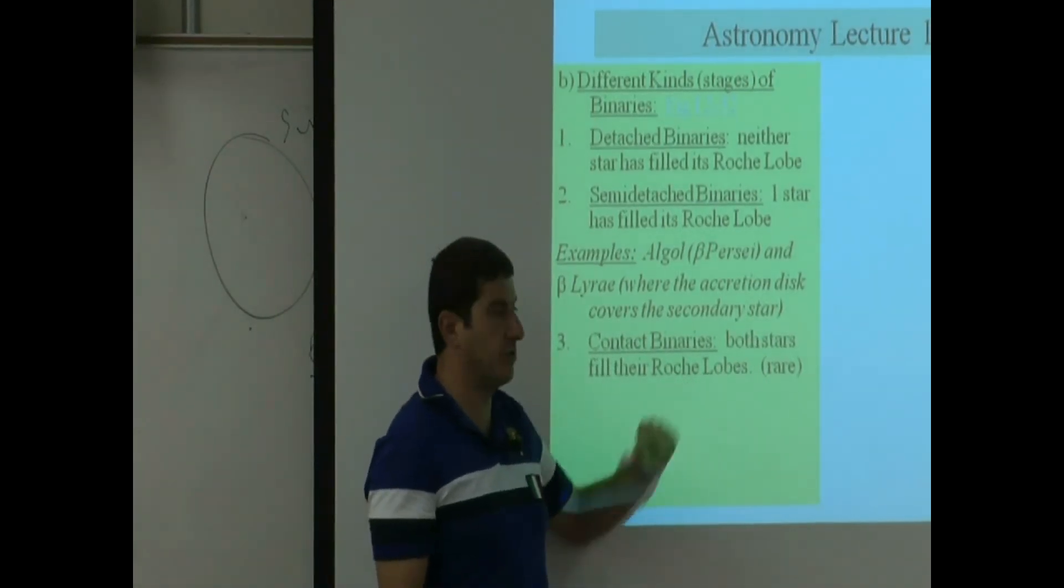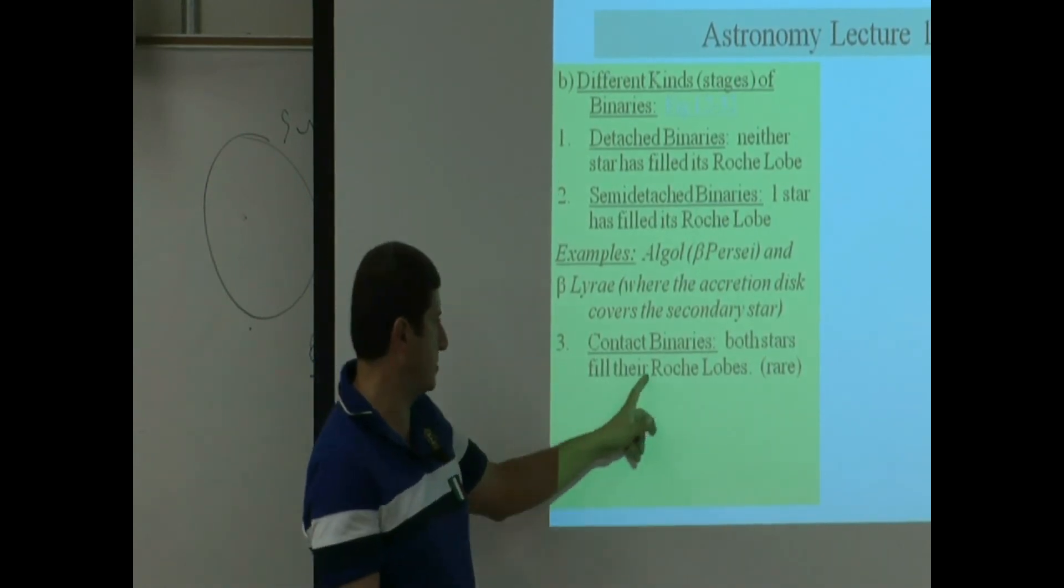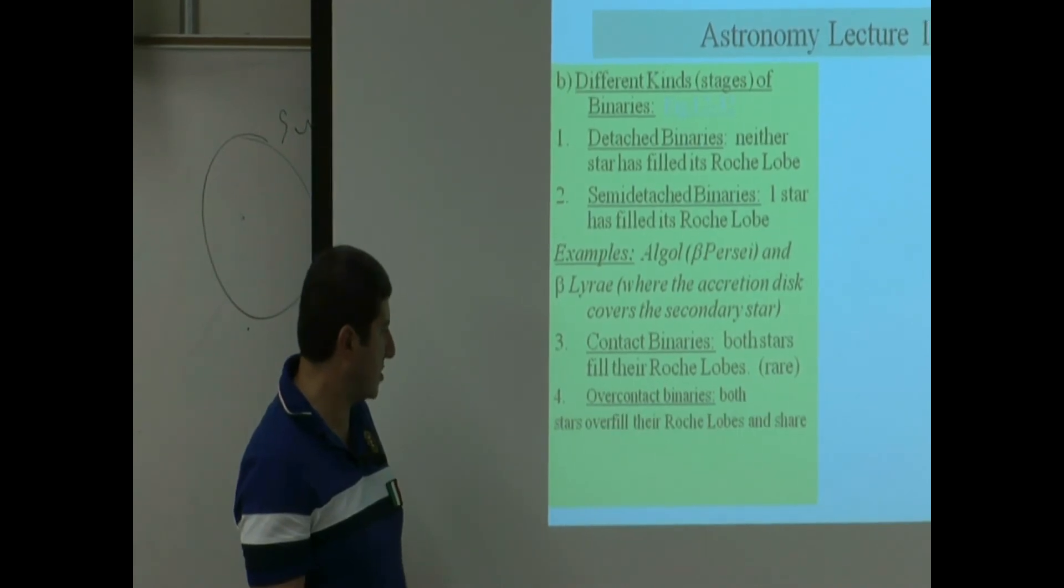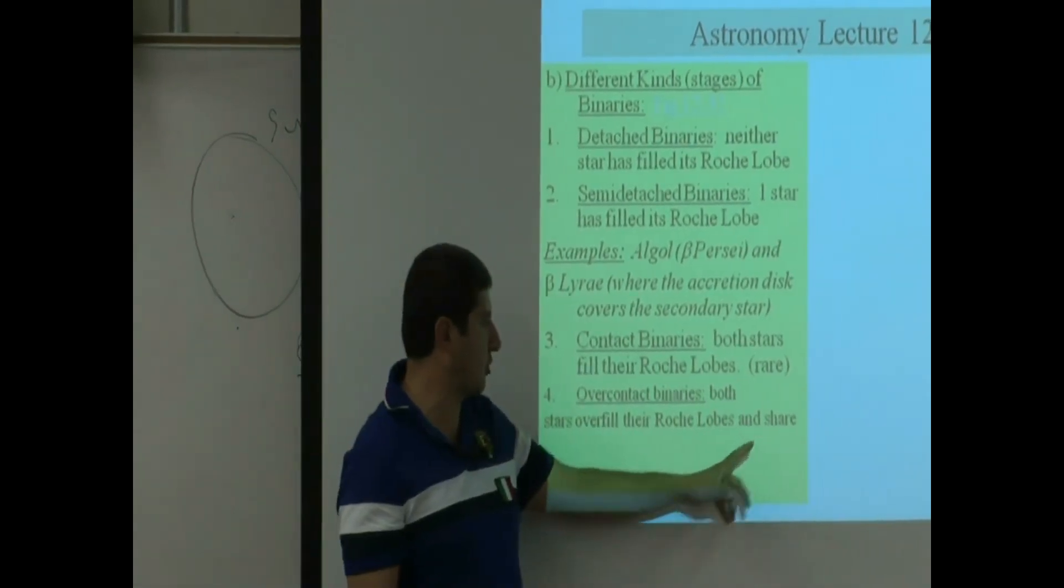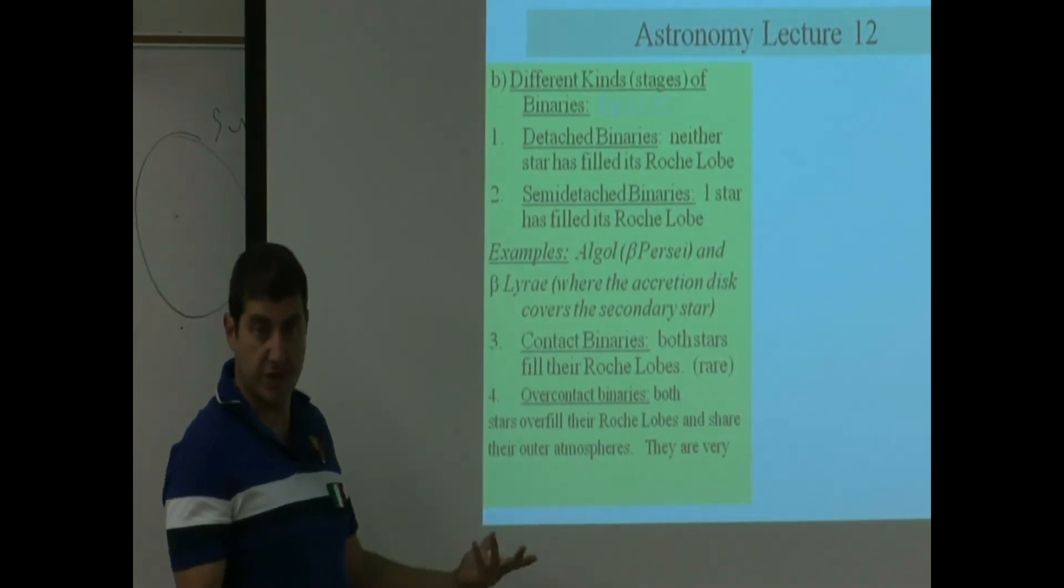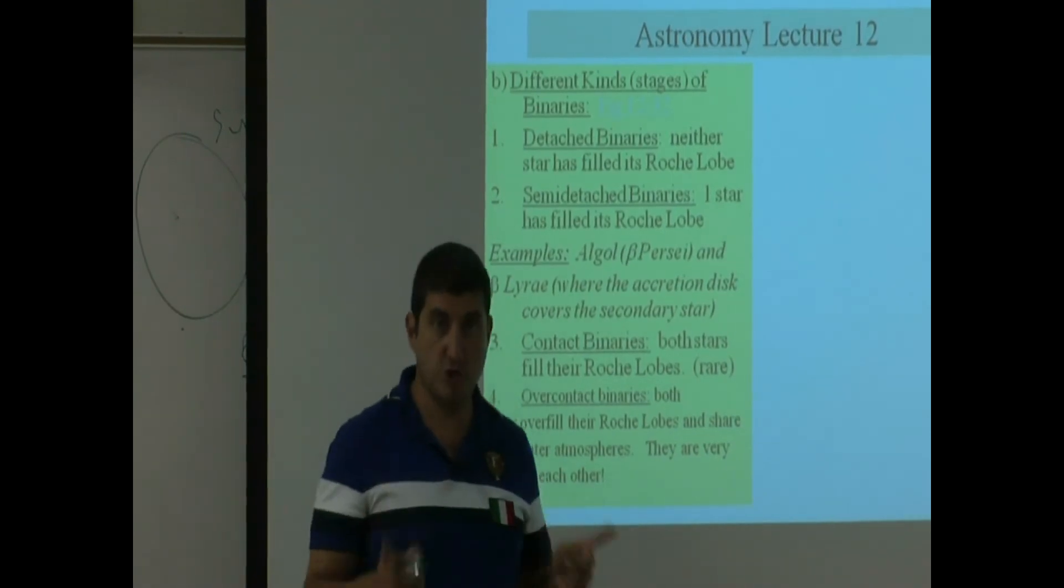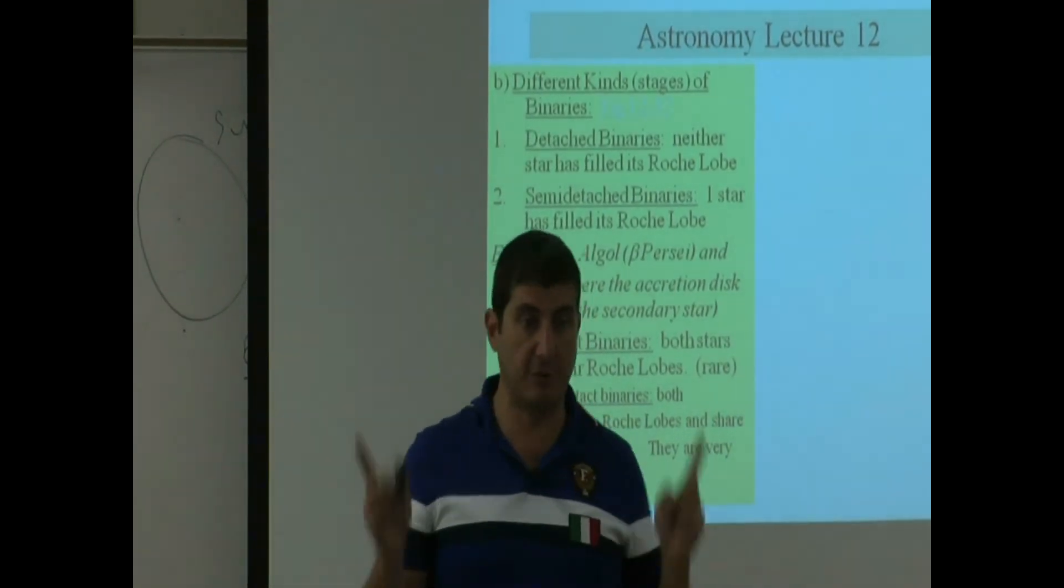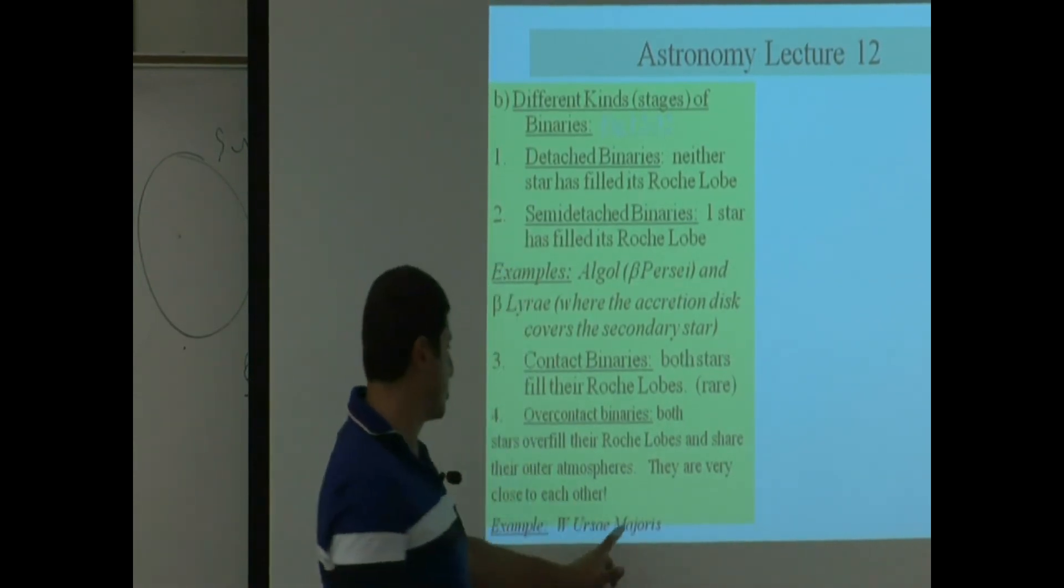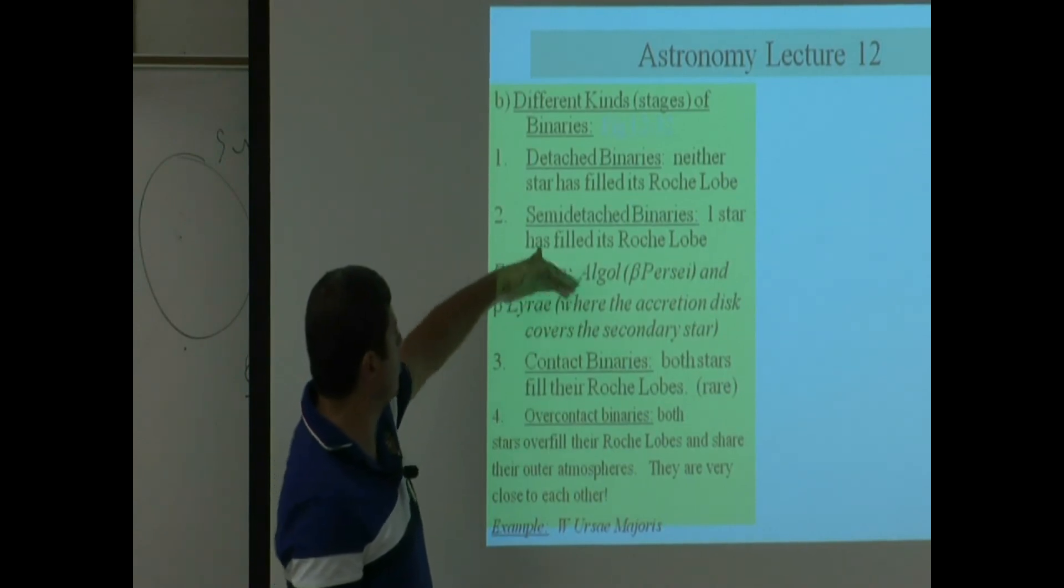The contact binary is the one that I said is rare to find. They're both touching each other at one point. Over-contact binary, both stars overfill their Roche lobes and share their outer atmosphere. That's the one that I showed earlier. They are very close to each other. So it usually happens when the stars begin very close. Example of that, W Ursa Majoris. So this is one example of that. These are two examples of that one.